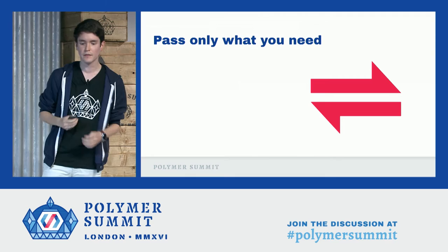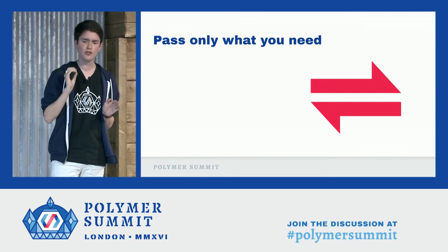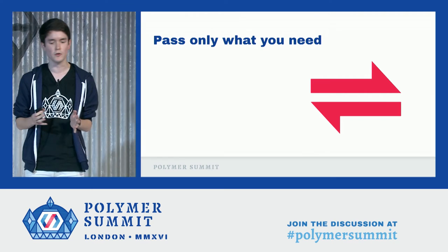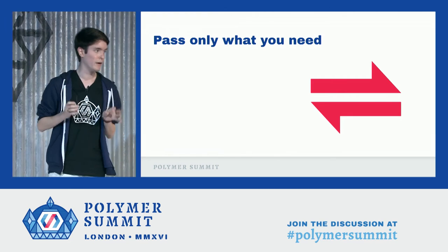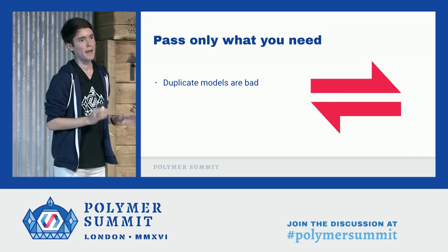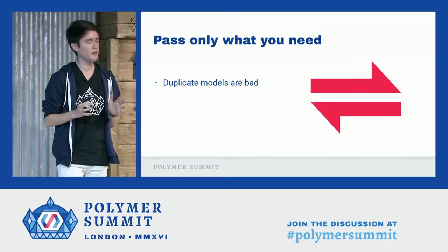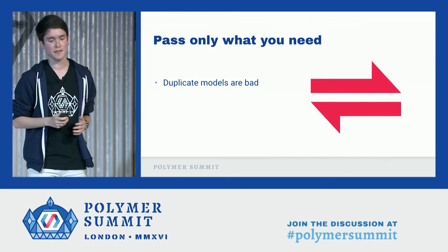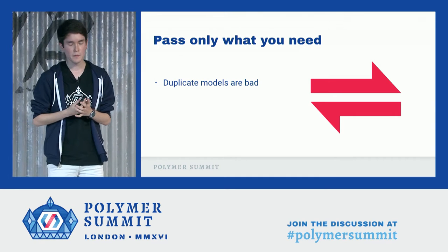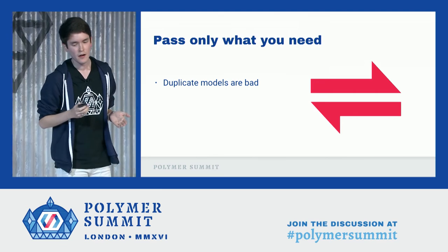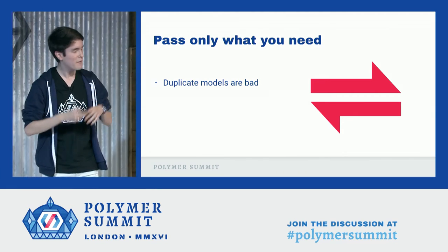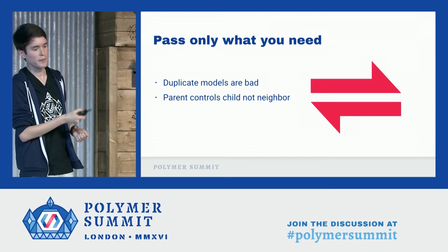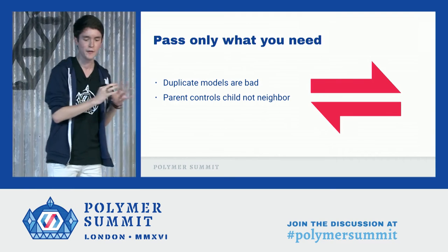Tip number two: pass only what you need. Polymer's data binding is a powerful tool that can shoot you in the foot. At the hackathon, we found a bunch of hackers were passing lists of objects to multiple children. This creates duplicate models, and duplicate models are bad — now you have models that are supposed to be synchronized but it's really easy to make them unsynchronized. This causes elements that don't respond to changes, or change too much, resulting in spaghetti code. Just like helicopter parents, a parent element should control its child's state all the time, not its neighbor's.